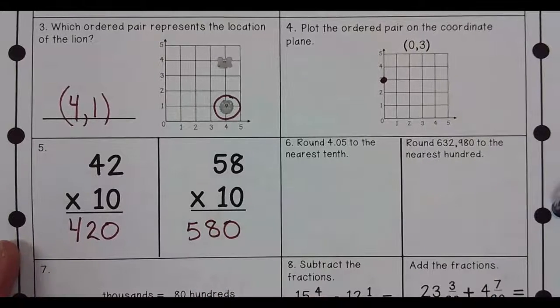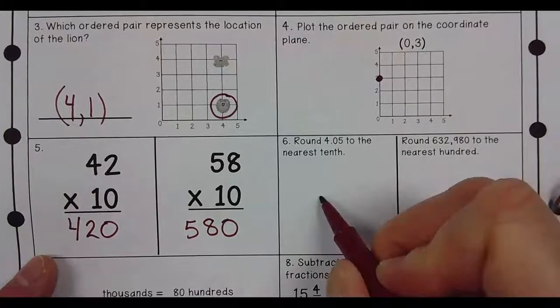Round 4.05 to the nearest tenth, it would be 4.1.